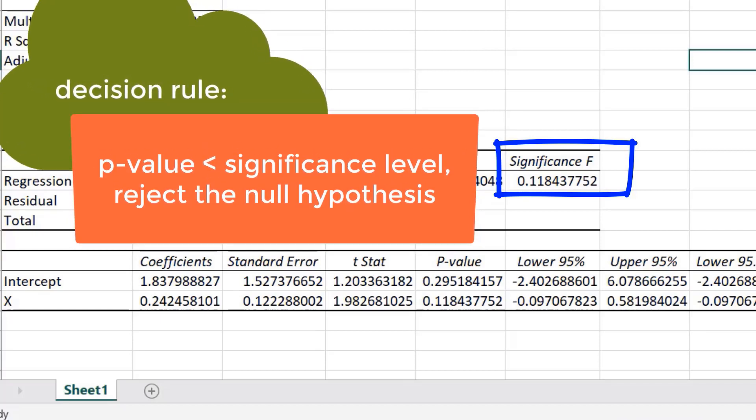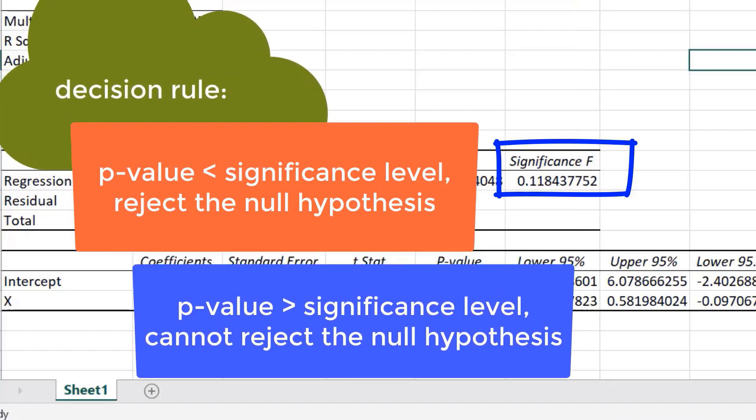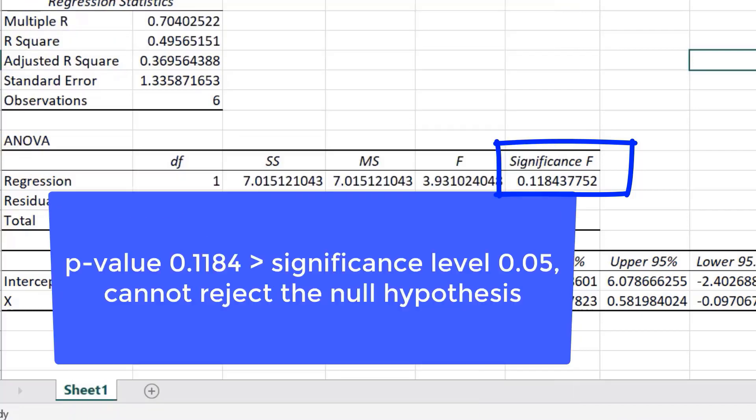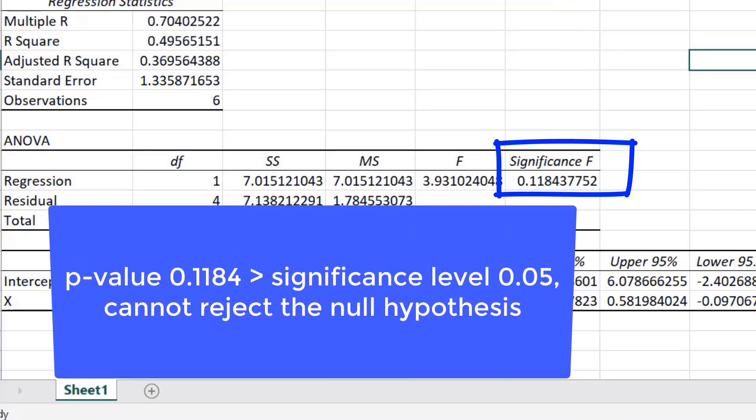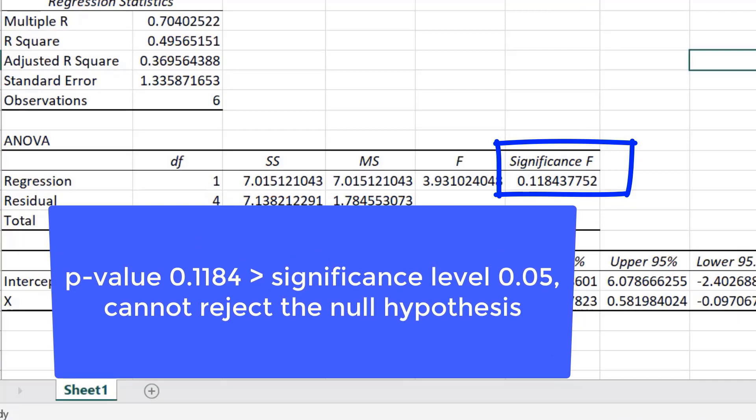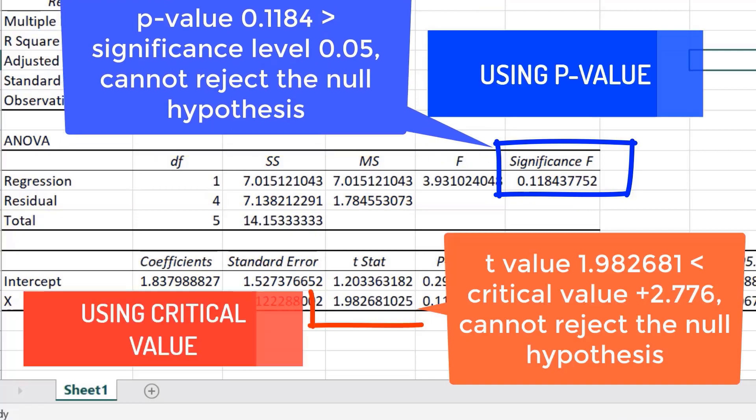If p-value is more than the significance level, we cannot reject the null hypothesis. Since p-value of 0.1184 is greater than significance level of 0.05, we cannot reject the null hypothesis. Take note that the two methods will give the same results.